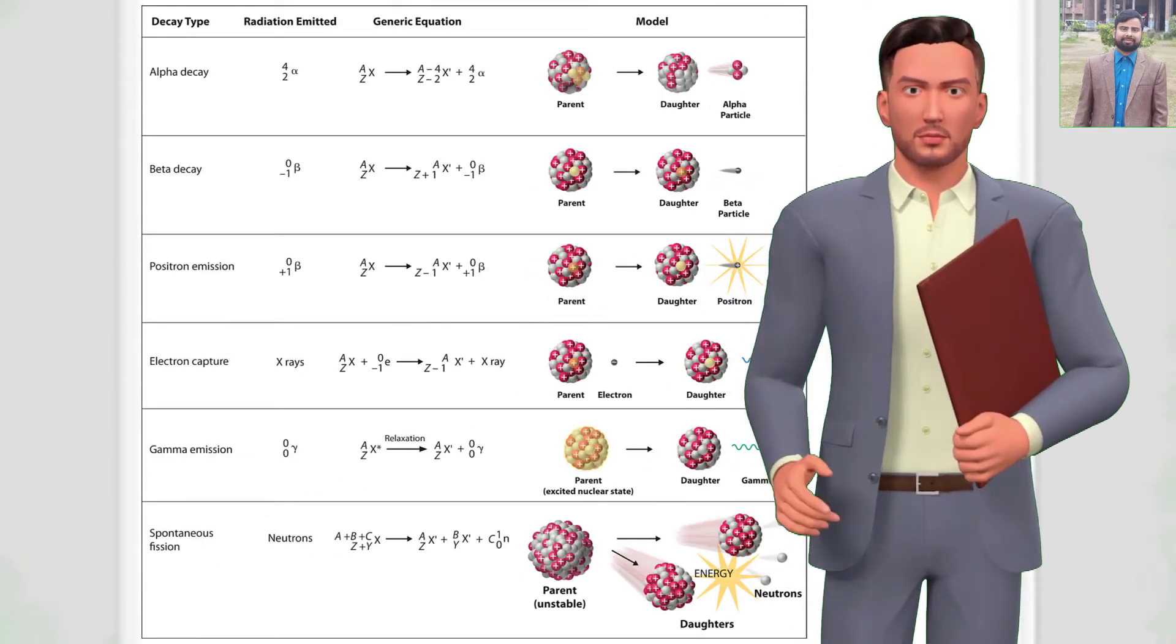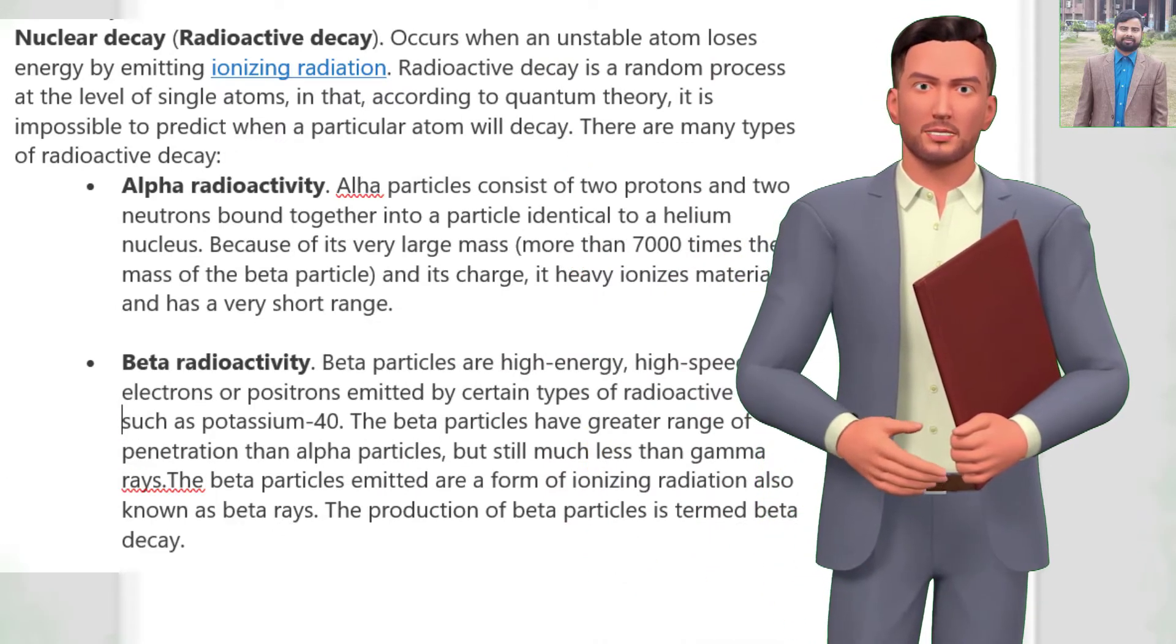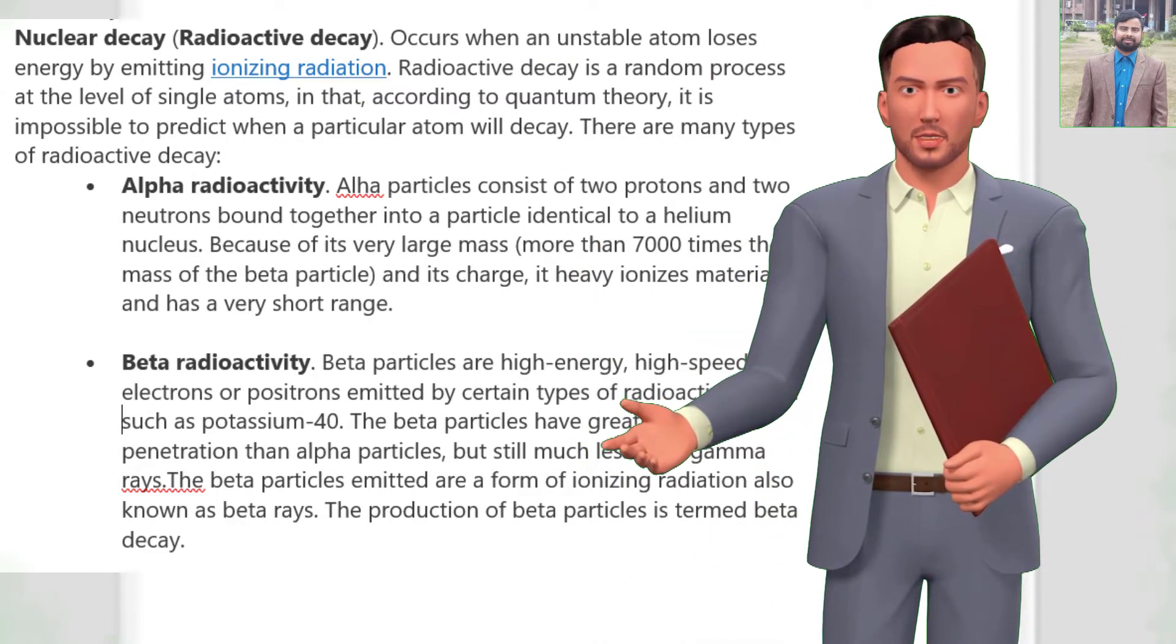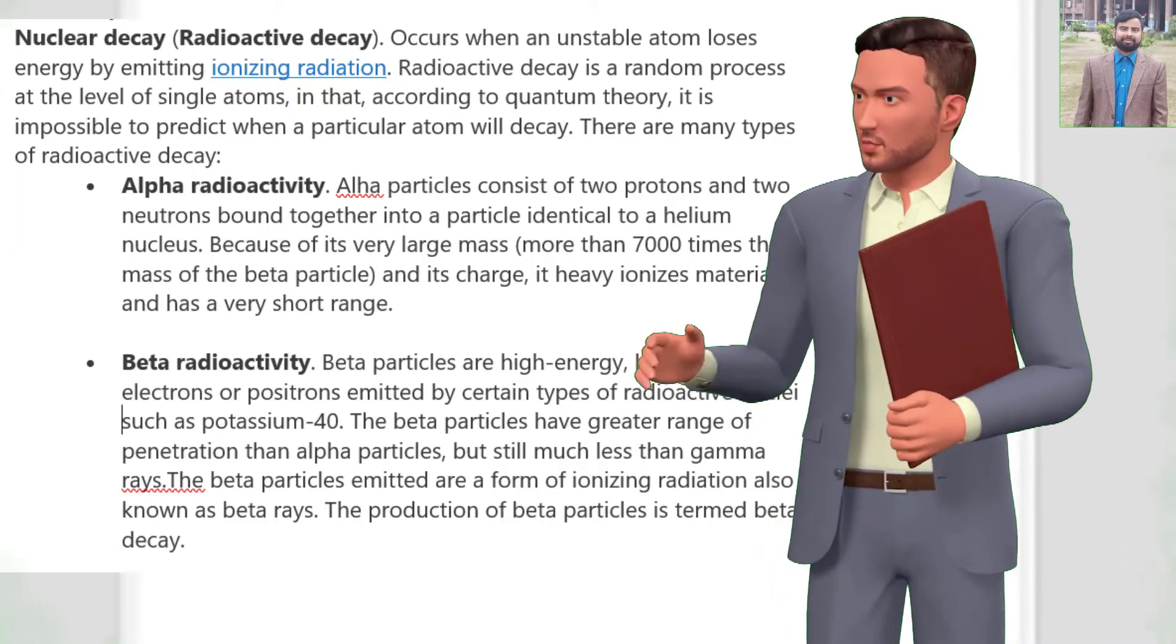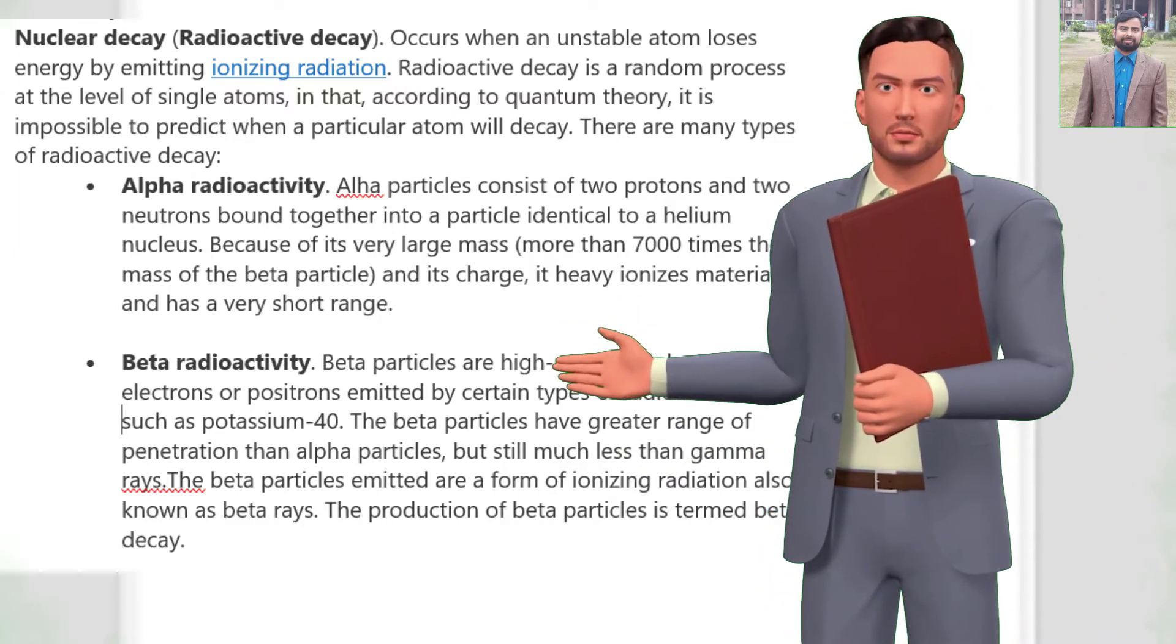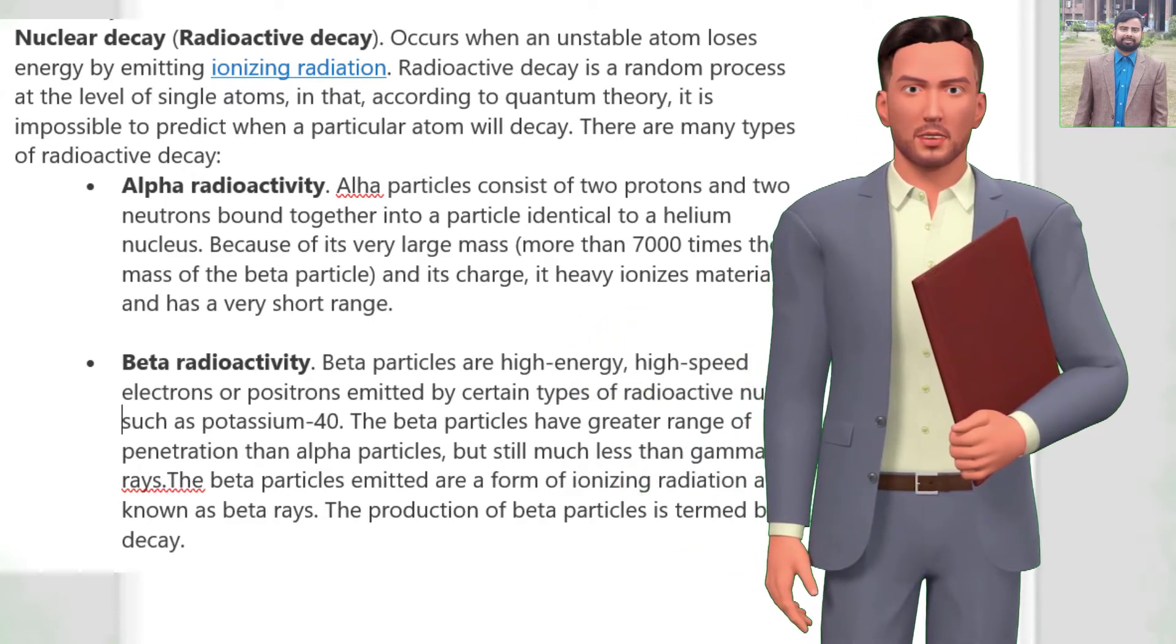Nuclear decay, or radioactive decay, occurs when an unstable atom loses energy by emitting ionizing radiation. Radioactive decay is a random process at the level of single atoms. According to quantum theory, it is impossible to predict when a particular atom will decay. There are many types of radioactive decay.